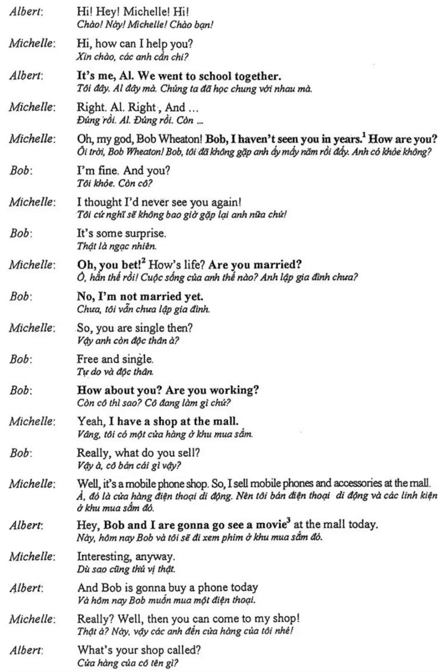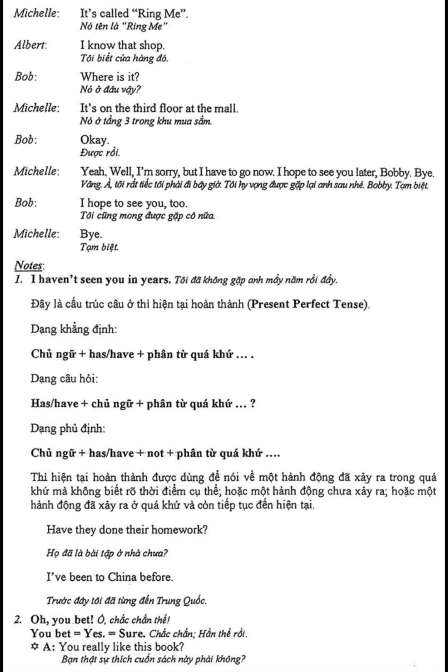Free and single! And how about you — are you working? Yeah, I have a shop at the mall. Really? What do you sell? Well, it's a mobile phone shop, so I sell mobile phones and accessories. Hey, Bob and I are going to go see a movie at the mall today, and Bob is going to buy a phone today. Well then, you can come to my shop. What's your shop called? It's called Ring Me. I know that shop! Where is it? It's on the third floor at the mall.